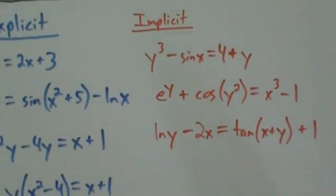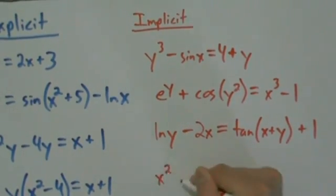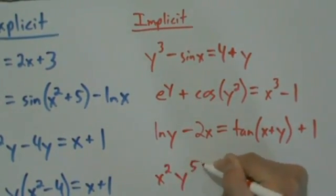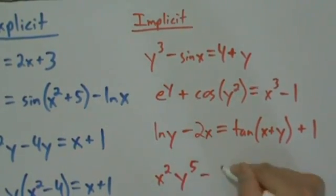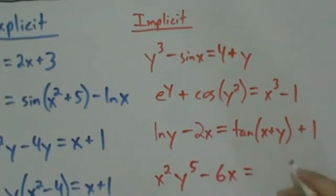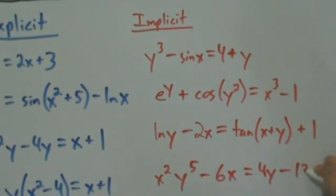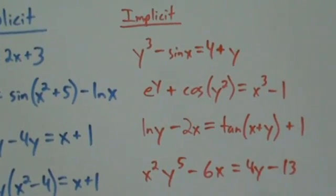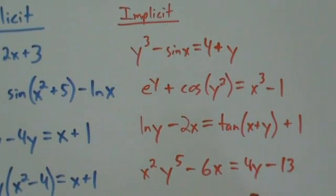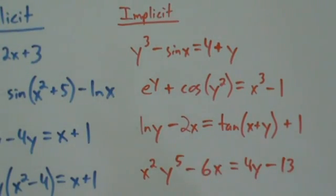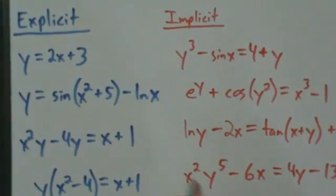One more example: x squared y to the fifth minus 6x equals 4y minus 13. Here's another example where y is an implicit function of x. As we mentioned, y is still a function of x, so you can still do the same sort of things that you would do with explicit functions.